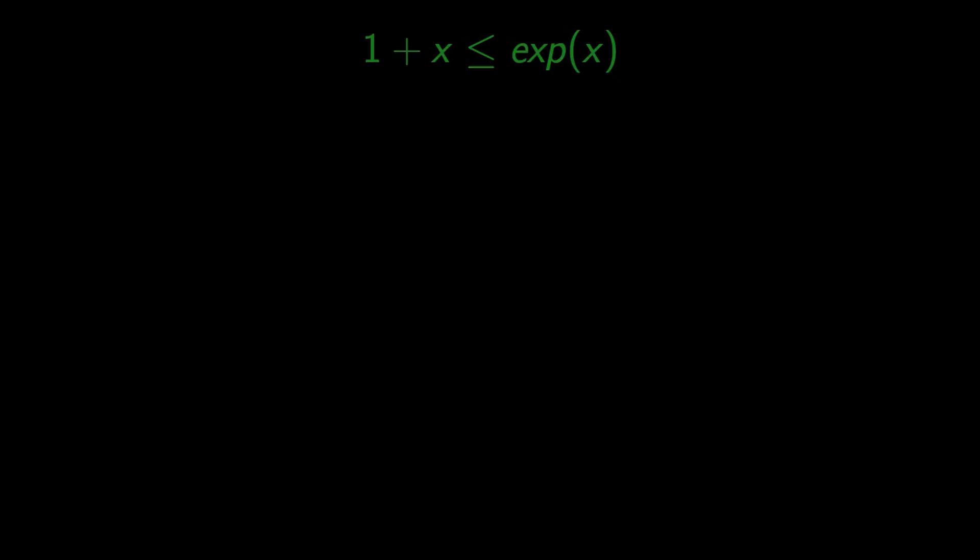One plus x is less than or equal to the exponent of x. To convince ourselves that this is the case, let's look at the graph of both functions. One plus x is actually tangent to exp(x) for x equals zero, otherwise it lies below.